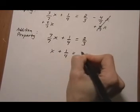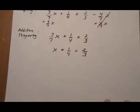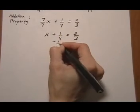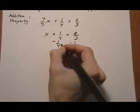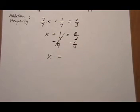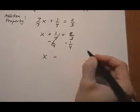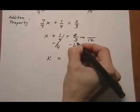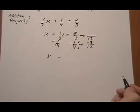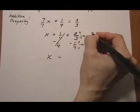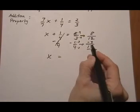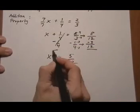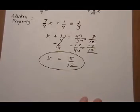So we have x plus 1/4 equals 2/3, and now we want to get rid of the plus 1/4, so we do the opposite, minus 1/4. It's gone on the left, and we get x equals 2/3 minus 1/4. Now we need to do common denominators. 12 is the common denominator. Times 4 top and bottom gives us 8. Times 3 gives us minus 3. So we end up with 8 minus 3, which is 5 over 12.